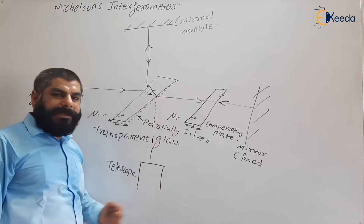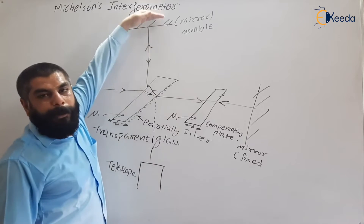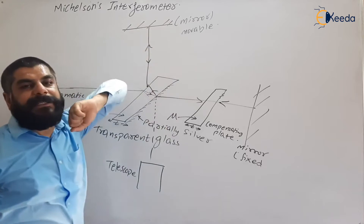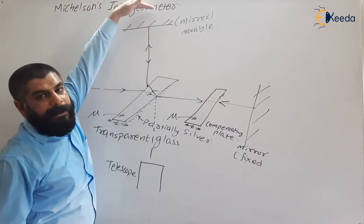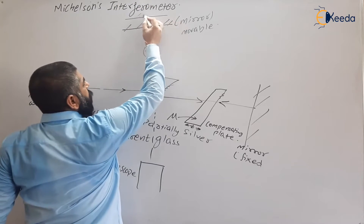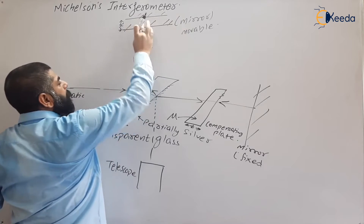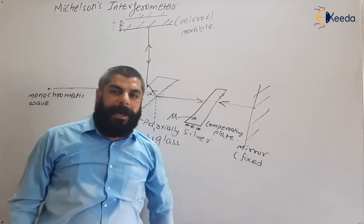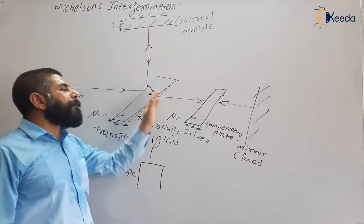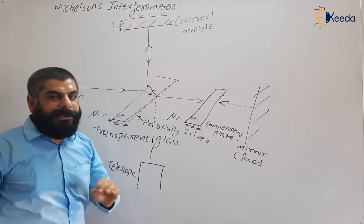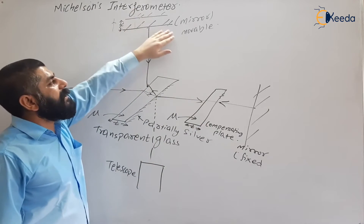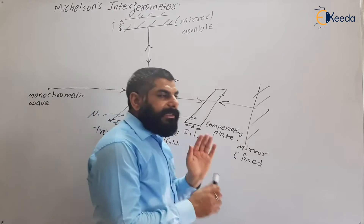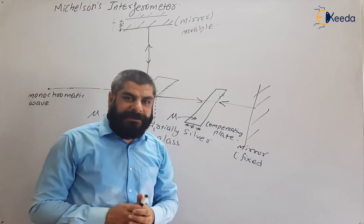Since one mirror is movable, we can create a path difference by moving it. If we move the mirror by distance x, the total path difference observed is 2x — because the light travels extra distance x going toward the mirror and x coming back. This path difference of 2x determines whether constructive or destructive interference is observed.